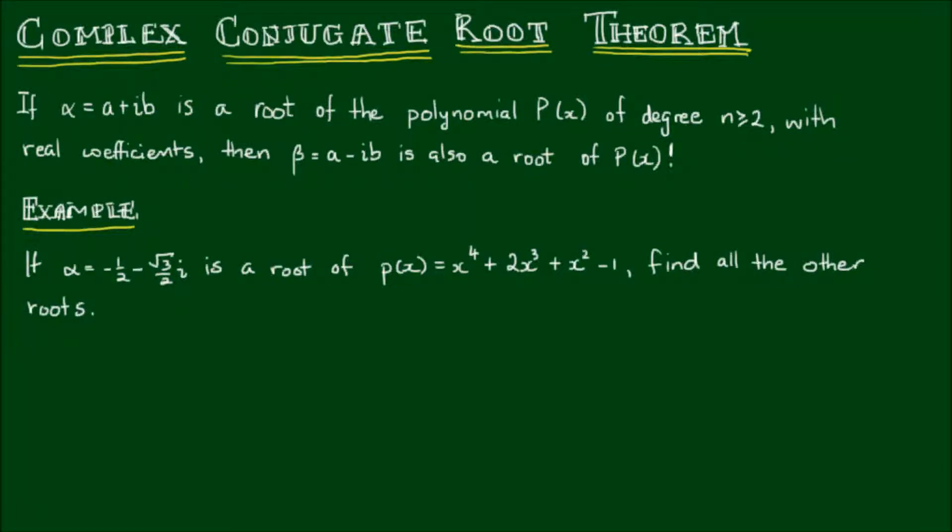In this video, I want to cover the complex conjugate root theorem. Now, there's nothing complex about this theorem - it is very simple. It simply states: if α = a + ib is a root of the polynomial P(x) of degree n ≥ 2 with real coefficients, then β = a - ib is also a root of P(x).